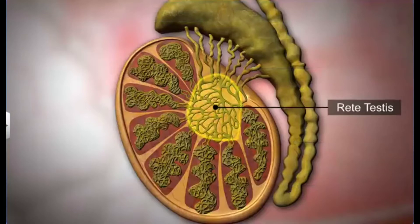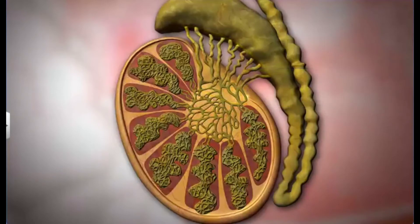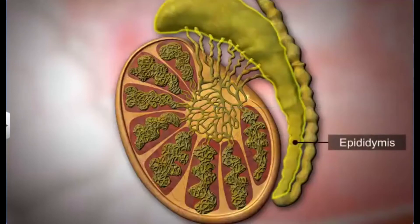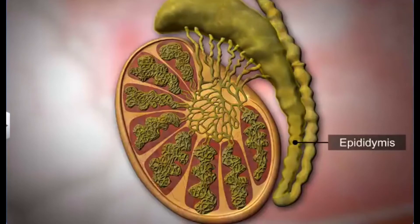The rete testis, vasa efferentia, epididymis, and vas deferens are the male accessory ducts. The rete testis is a network of ductules formed by seminiferous tubules. Vasa efferentia are ciliated ductules that arise from the rete testis; they collect sperms and transfer them to the epididymis.